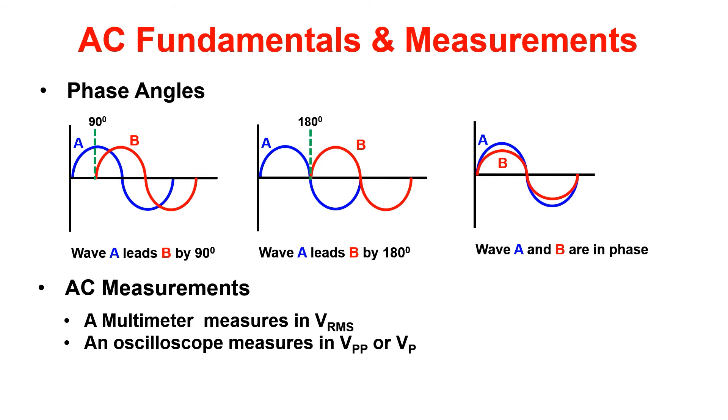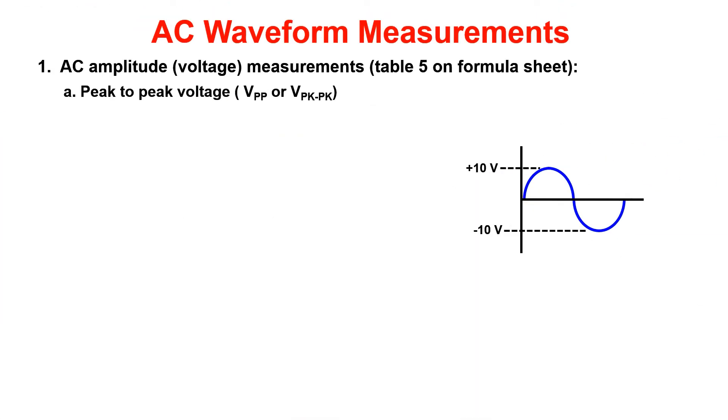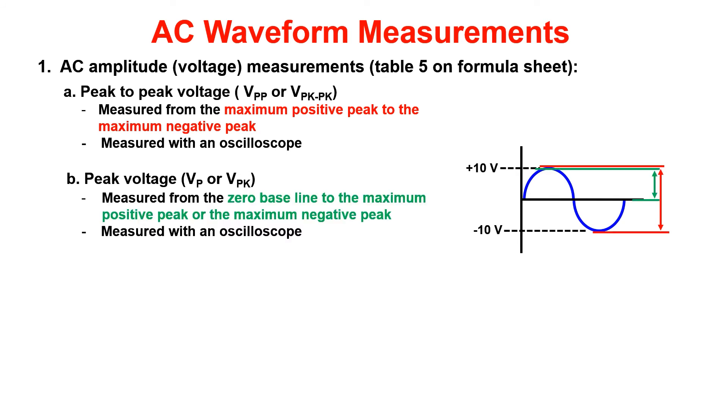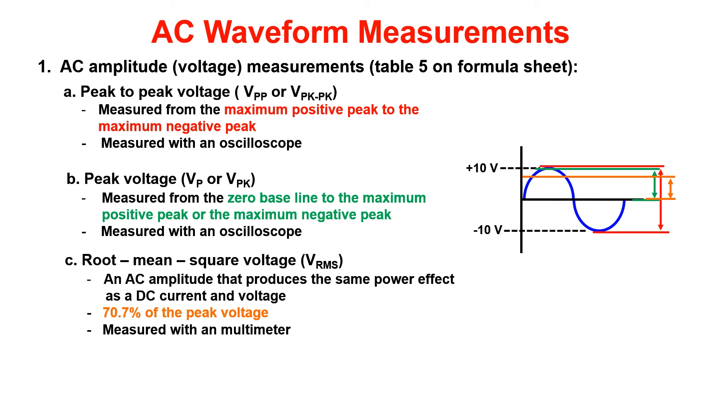Now to identify the different types of AC voltage measurements. Peak to peak is measured from the maximum positive peak to the maximum negative peak. This is shown by our red arrows. Peak voltage is measured from the zero baseline to the maximum positive or maximum negative peak. Volts RMS is an AC amplitude that produces the same power effect as a DC current and voltage. This is 70% of the peak voltage. If you remember when we talked about AC measurements, this is what your multimeter measures in. Now the last AC measurement is volts average, which is 63.7% of the peak voltage.